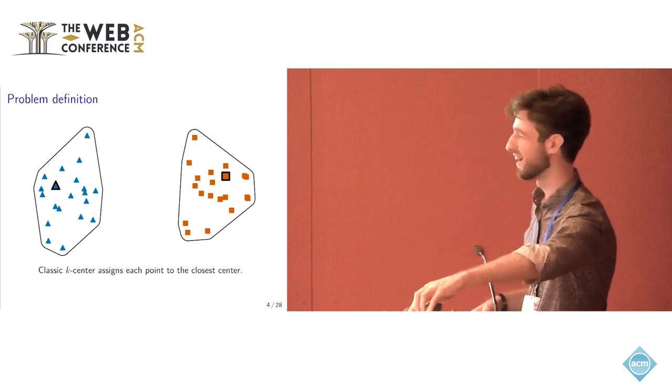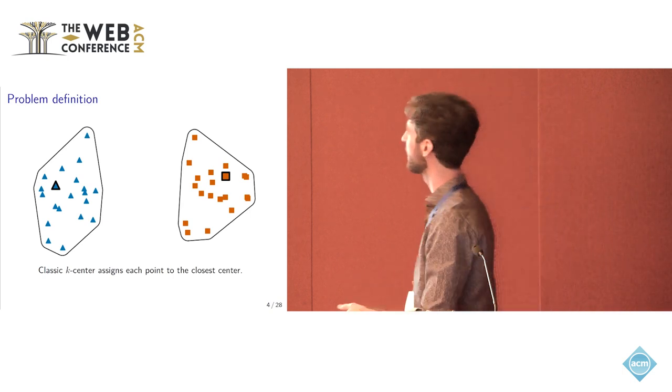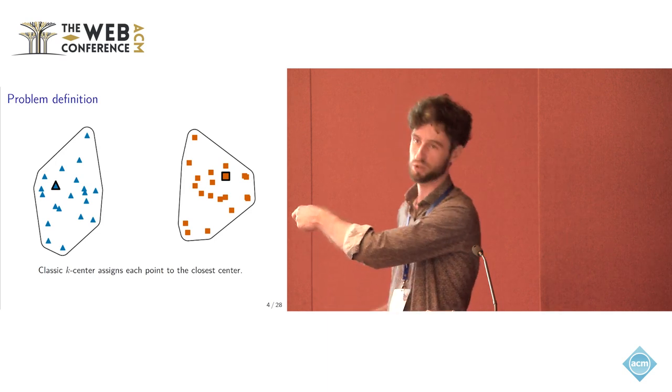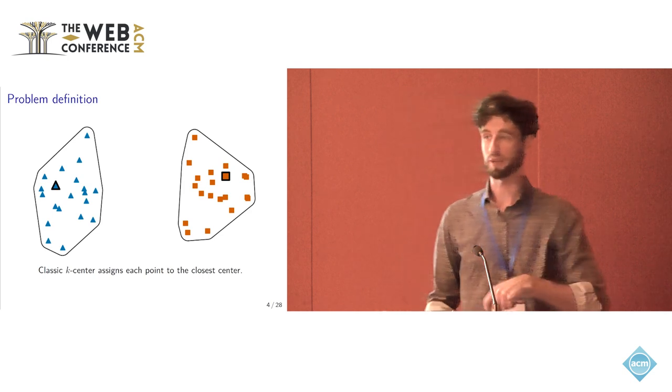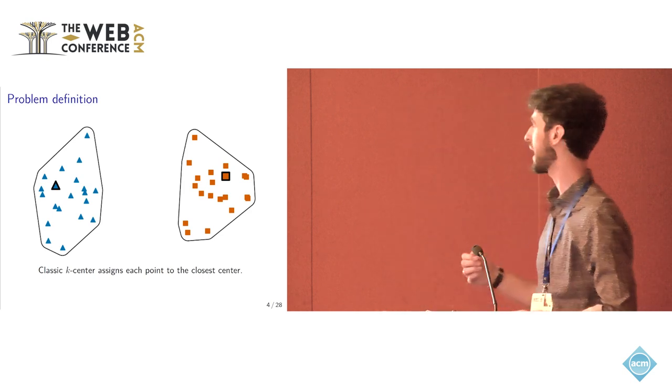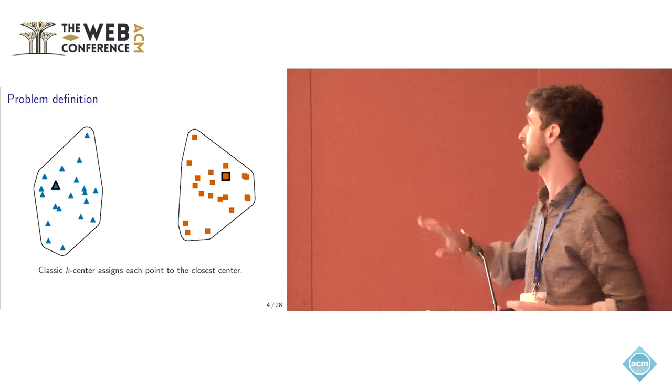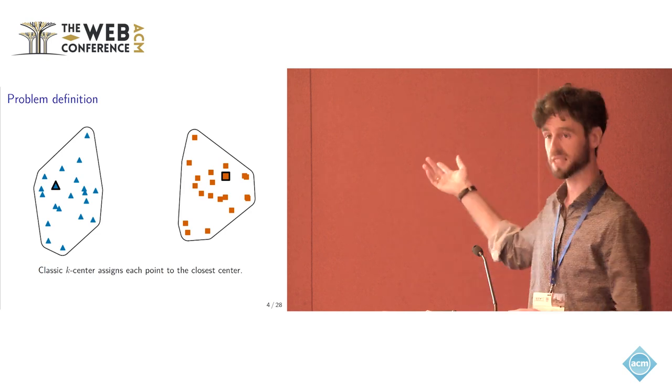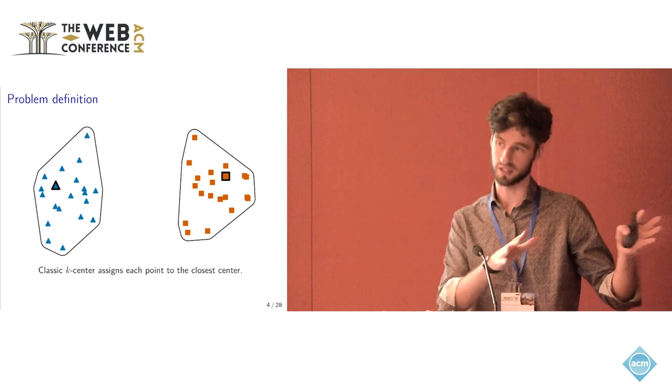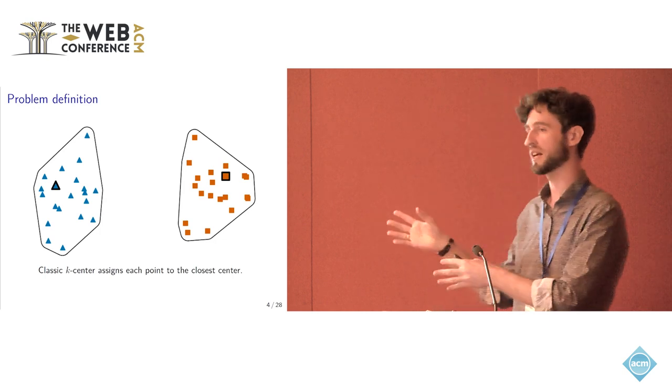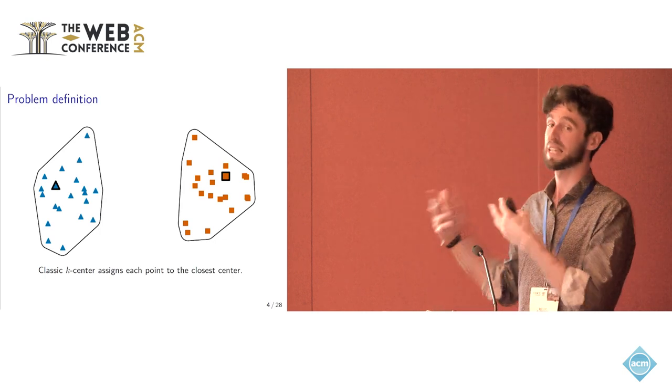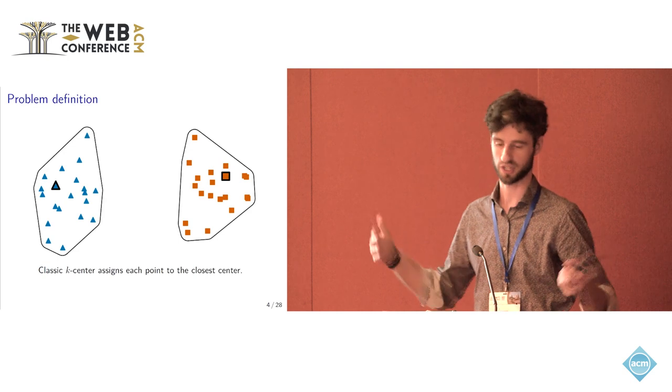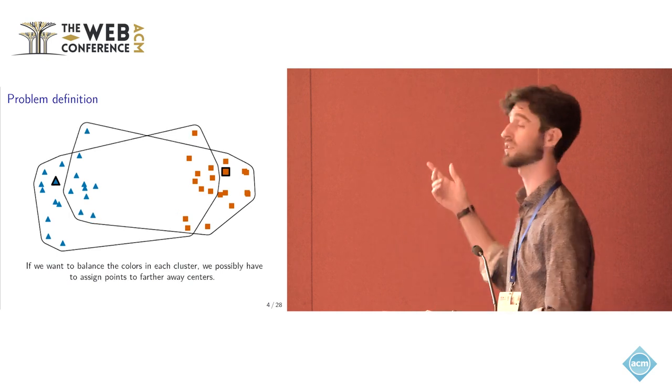Usually, you cluster points by assigning them to the closest possible center to minimize the radius. But maybe in this case you have two different groups, blue people and orange people, or you can think men and women. With this assignment, you have one cluster only of men and one cluster only of women. That might not be desirable. You might want to have a balance in each cluster.